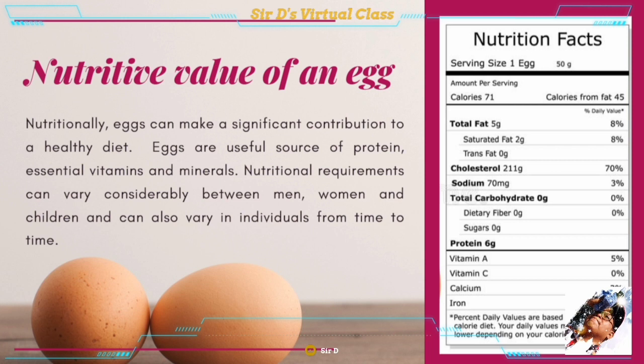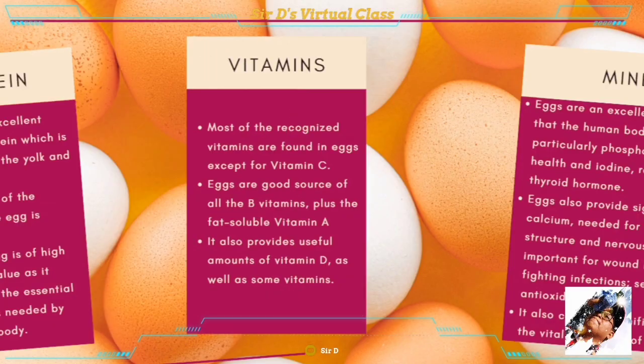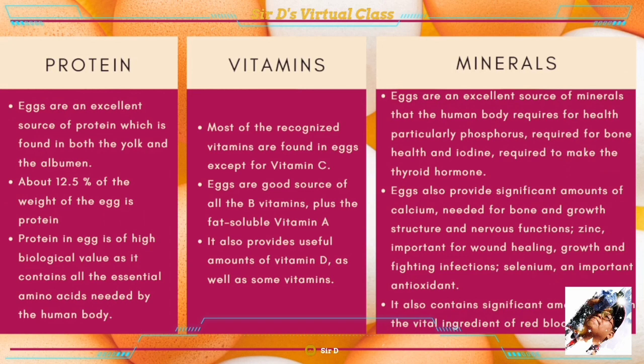Nutritional requirements can vary considerably between men, women, and children, and can also vary in individuals from time to time. Proteins: eggs are an excellent source of protein, which is found in both the yolk and the albumin. About 12.5 percent of the weight of an egg is protein. Protein in eggs is of high biological value as it contains all the essential amino acids needed by the human body.